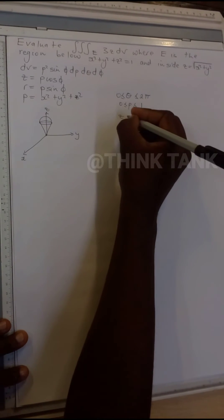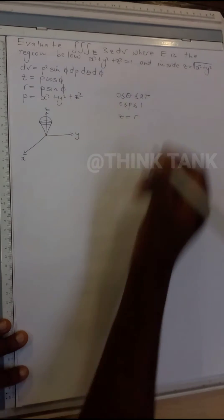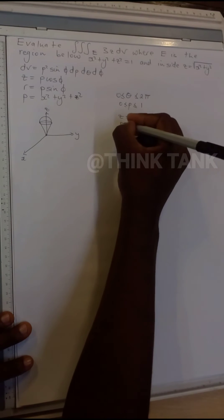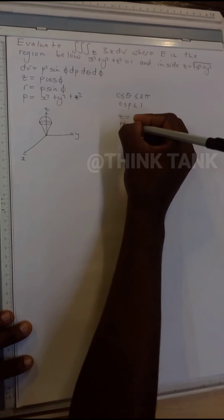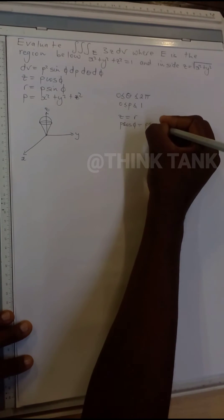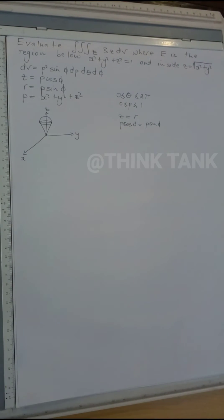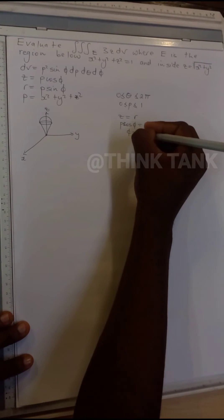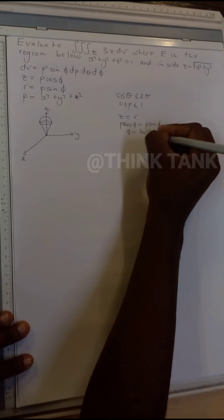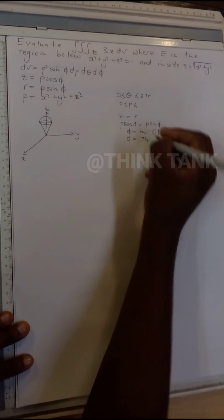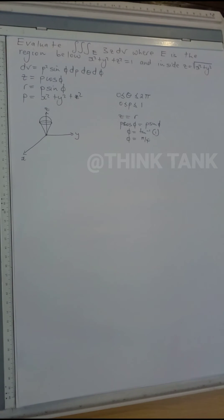For φ: we know that x² plus y² equals r², which means z equals r. Then z in cylindrical coordinates goes to ρ cosφ, and r is also ρ sinφ. With this information we can find φ: φ equals tan inverse of 1, which means φ equals π/4.